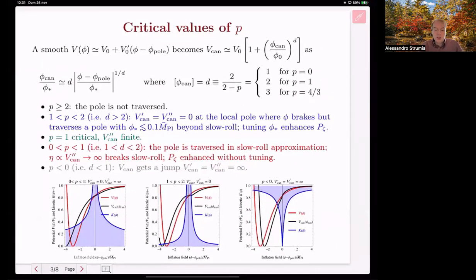In the case with power 1, a critical change happens and the second derivative is finite, going below 1, meaning dimension of the field below 2, the pole could be traversed even in slow roll approximation.